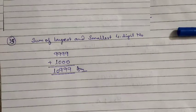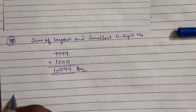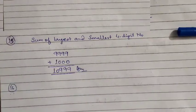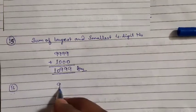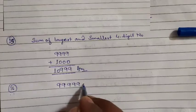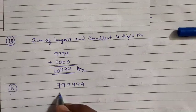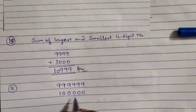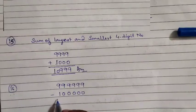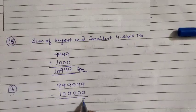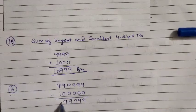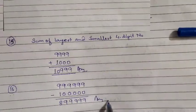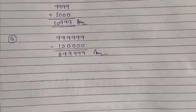Question 16: Find the difference between the smallest and greatest six-digit numbers. The greatest six-digit number is 999999. The smallest six-digit number is 100000. Subtracting: 999999 minus 100000 gives 899999. This is the difference between the greatest and smallest six-digit numbers.